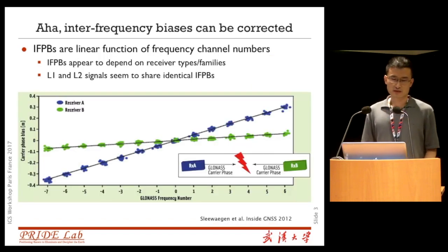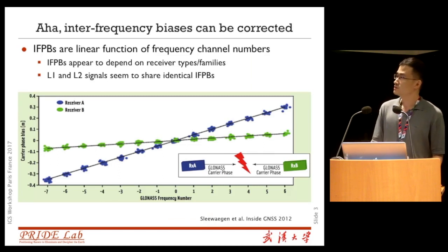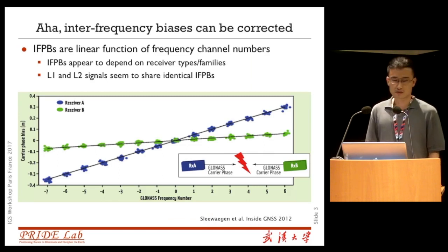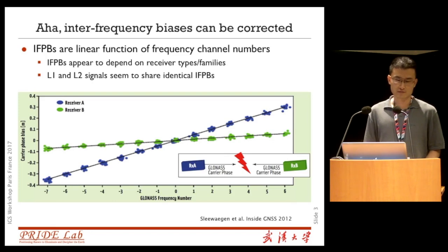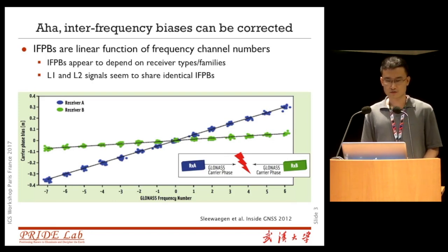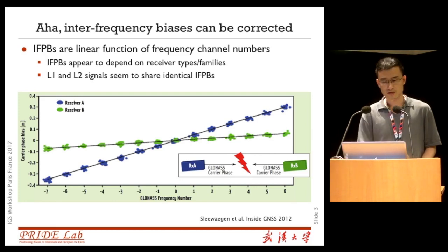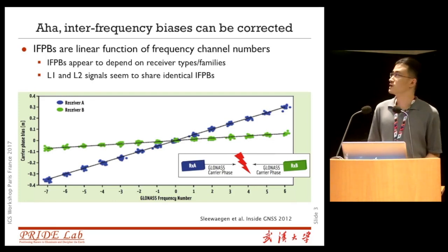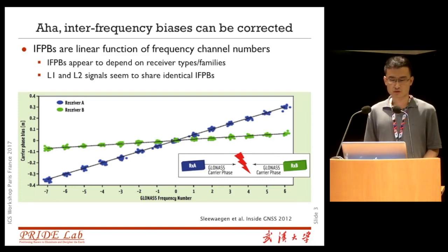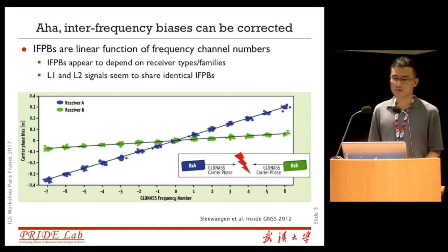The good news is that interfrequency phase bias can be corrected. According to previous studies, interfrequency phase bias — namely IFPB — is a linear function of frequency channel numbers, and it appears to depend on receiver types and manufacturers. L1 and L2 share similar or the same IFPB.